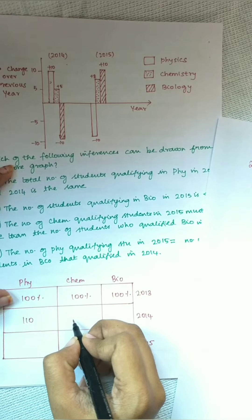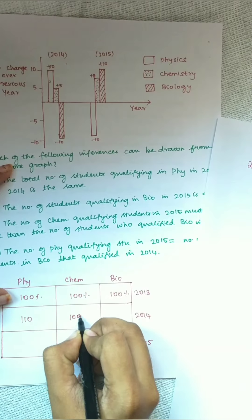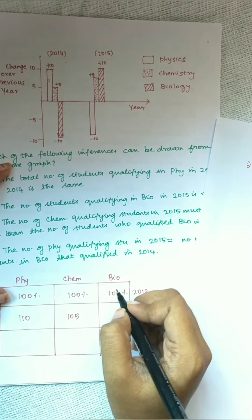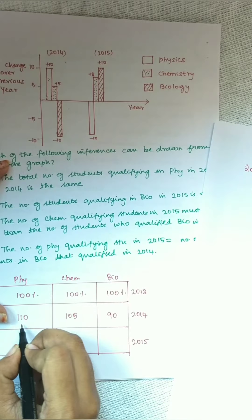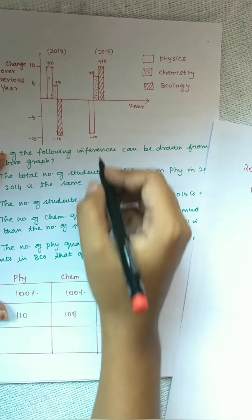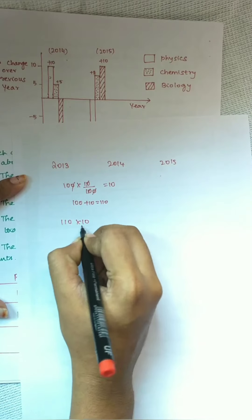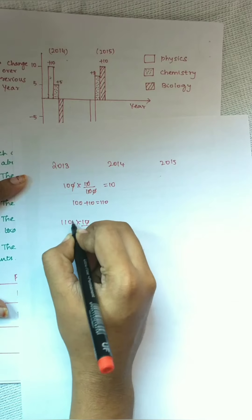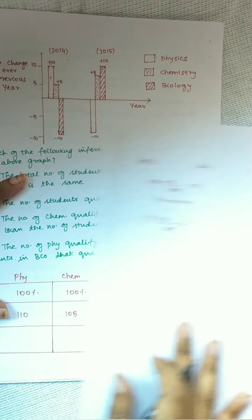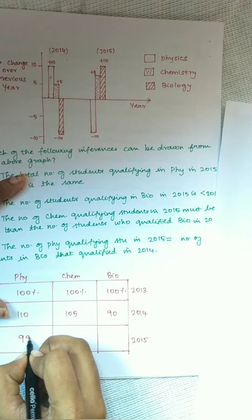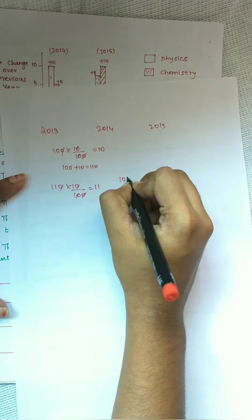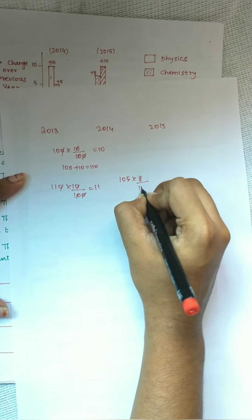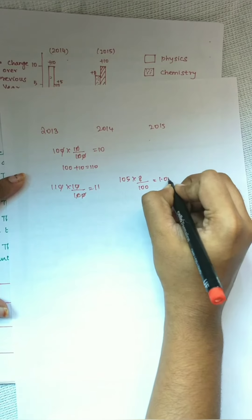Which of the following inferences can be drawn from the above graph? This graph shows the percentage change over previous years of the qualifying students of three subjects — physics, chemistry, and biology. The options show the qualifying students of the various subjects with respect to the years. Let us calculate the number of students qualifying in each year from 2013, 2014, and 2015 and look into the options.